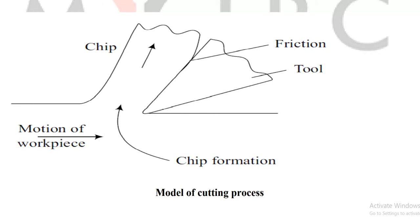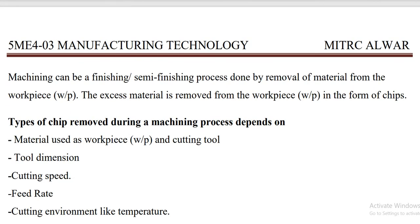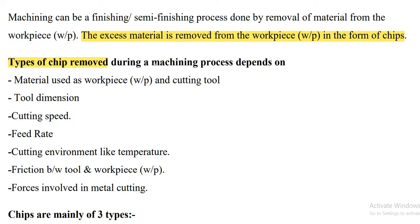Machining is a finishing or semi-finishing process done by removal of material from the workpiece; the excess material is removed in the form of chip. The type of chip removal during the machining process depends on: the material used as workpiece, cutting tool, cutting speed, temperature, friction between tool and workpiece, and the process involved.